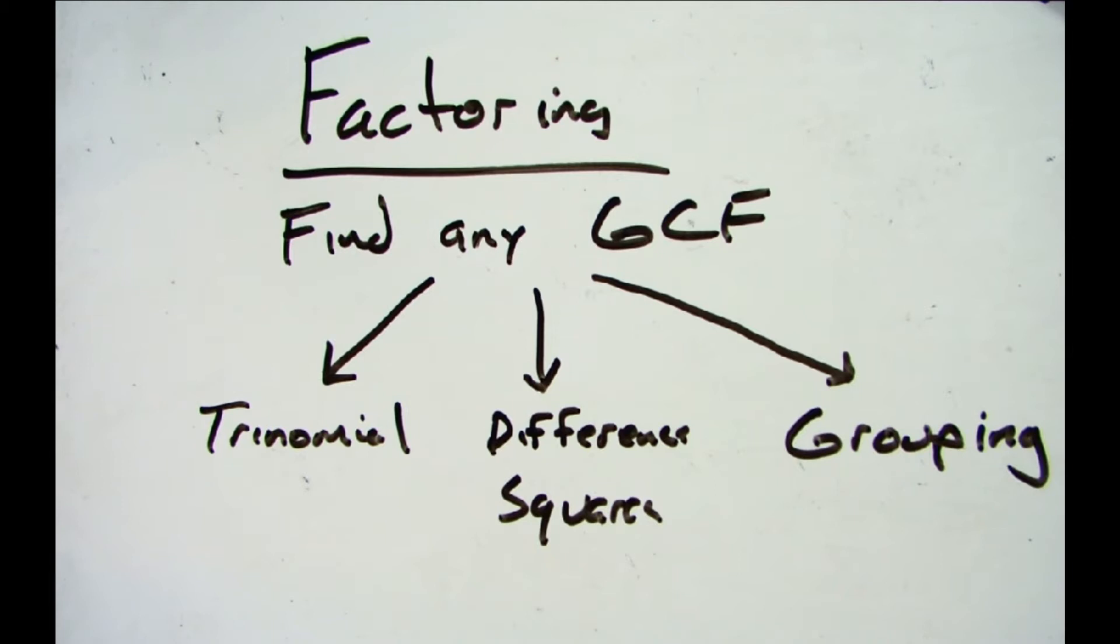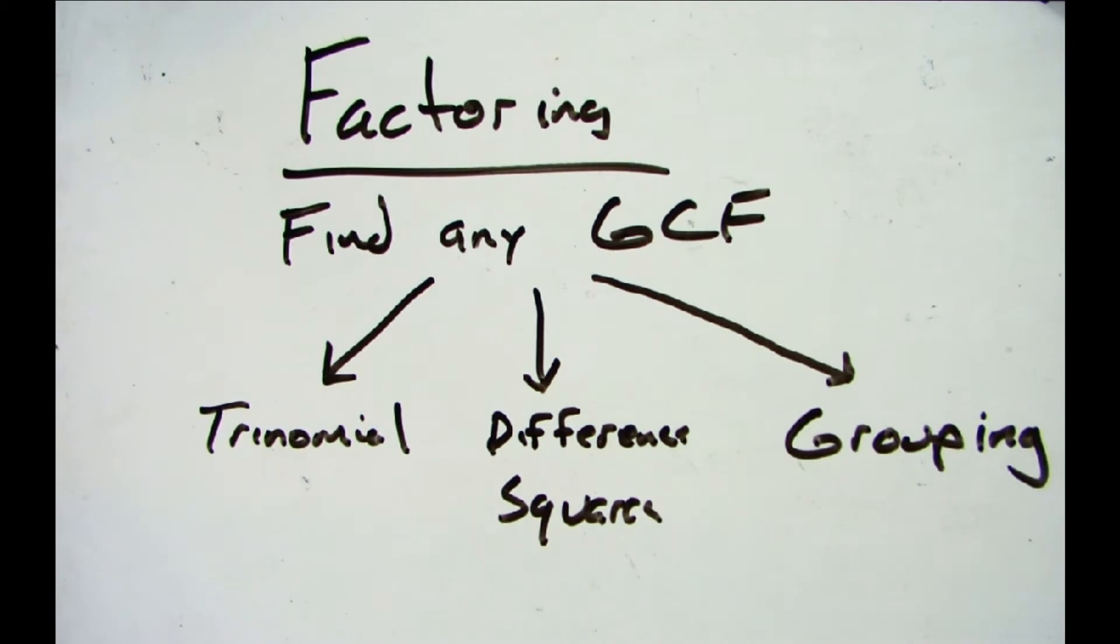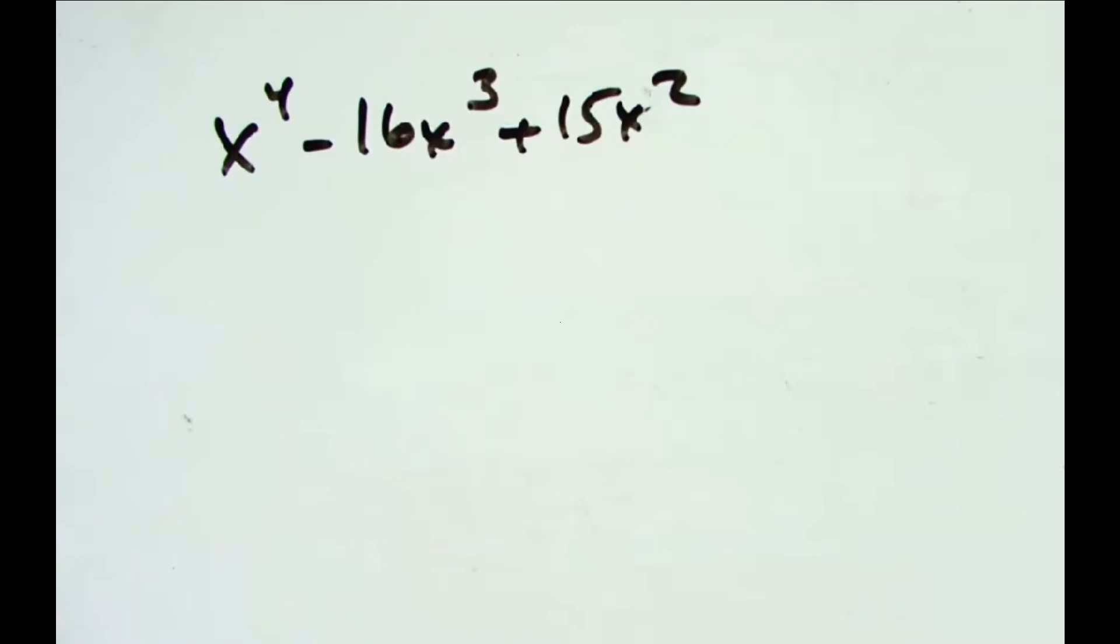Here's our diagram for factoring. The first thing you do when you have a factoring problem is look for and find any greatest common factor. There isn't one in a lot of them, and most of the problems we've done there's not a greatest common factor, but there's going to be in some of these. Once you've taken out a greatest common factor, which will be part of your answer later, you're going to be left with a trinomial or a difference of squares or one to factor by grouping. At that point you have to follow those steps that we learned before.